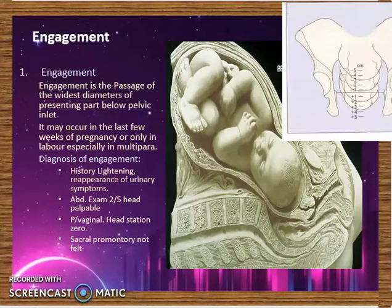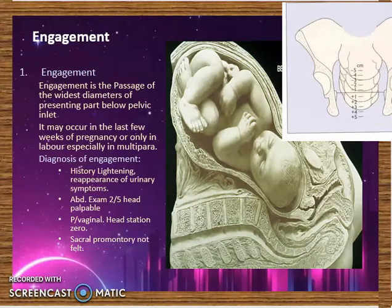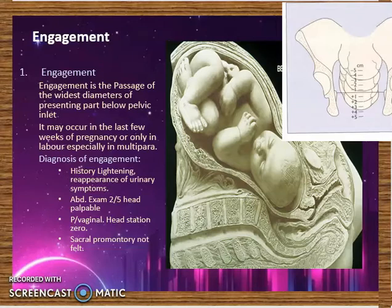Engagement is simply the passage of the widest diameters of the presenting part below the pelvic inlet. The pelvic inlet or pelvic brim is the part just above the symphysis pubis — it is formed by the symphysis pubis and the sacral promontory of the woman's pelvis. As the fetal head descends and engages, it enters the pelvic brim, and that is the engagement we are talking about.